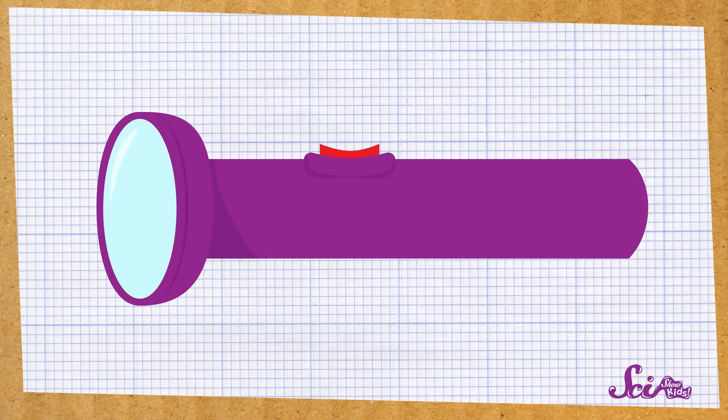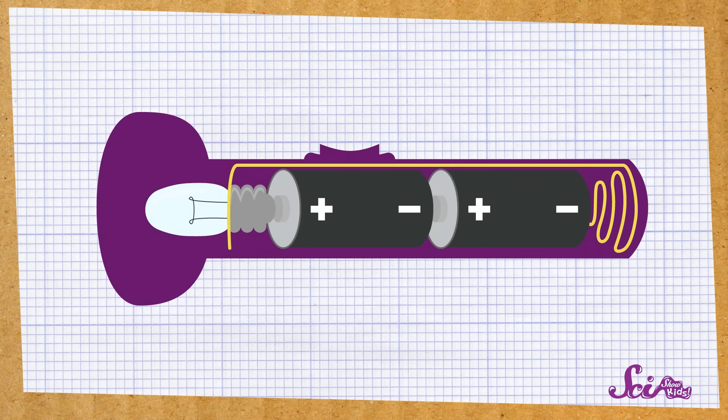Right you are, Squeaks! It's electricity that makes the light go on! You probably already know something about the electricity that powers things in your house. Well, the electricity in a flashlight comes from the batteries that are inside. Electricity flows from the battery to the light bulb. And when the electricity goes through the bulb, the flashlight lights up.